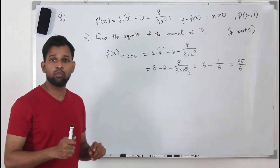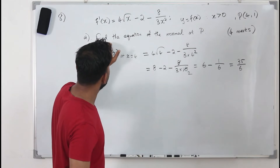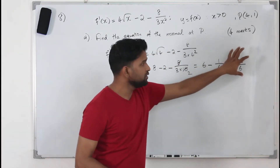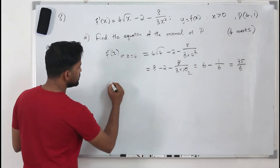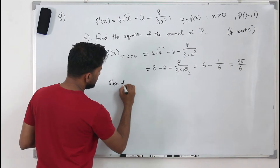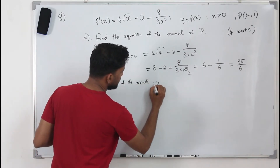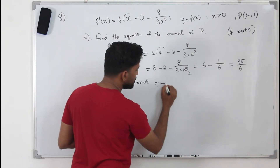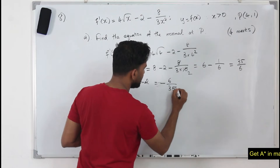That's the slope of the tangent. When they ask you to find the equation of the normal, you take this slope and find the negative reciprocal. So the slope of the normal is the negative reciprocal — you change the sign and put the number upside down: negative 6 over 35.